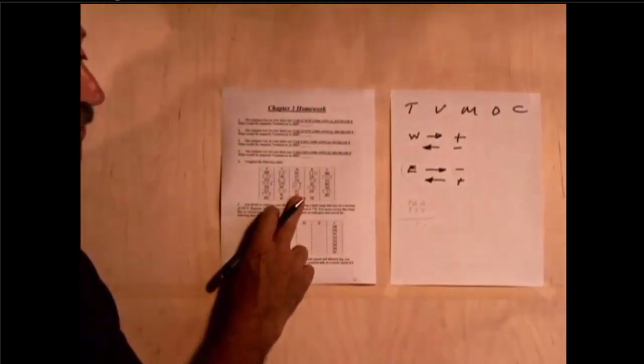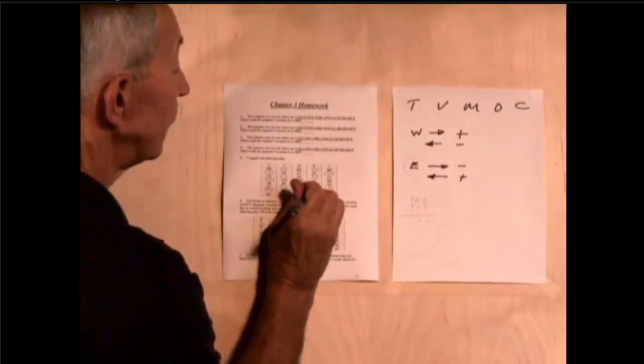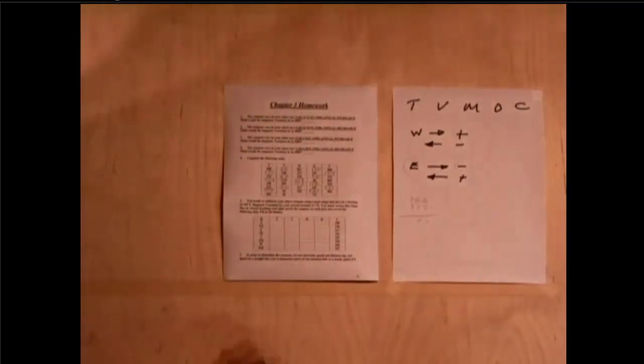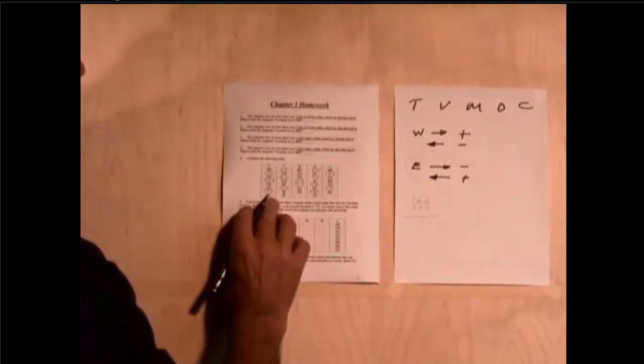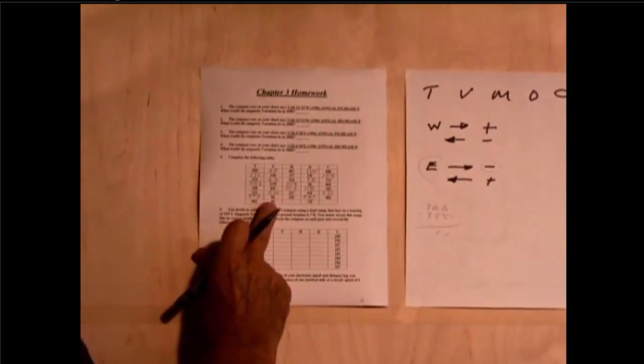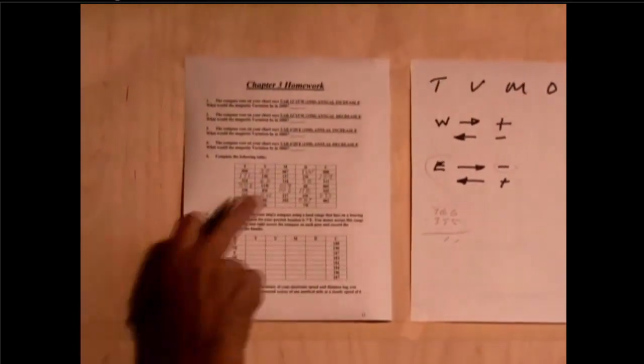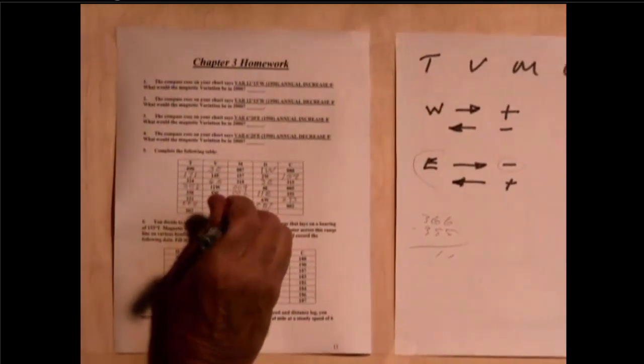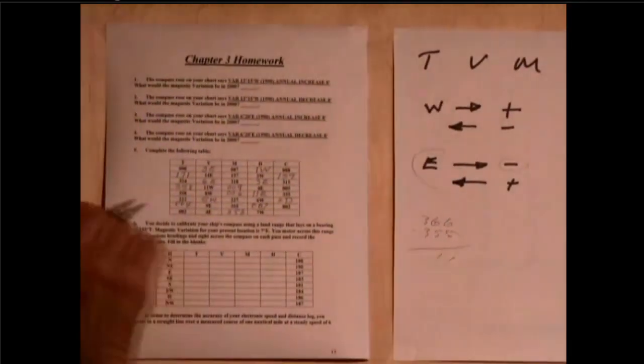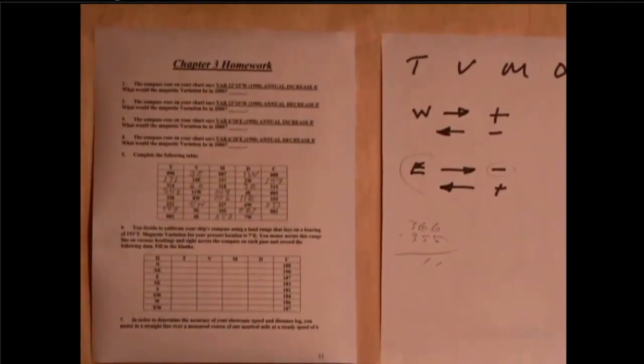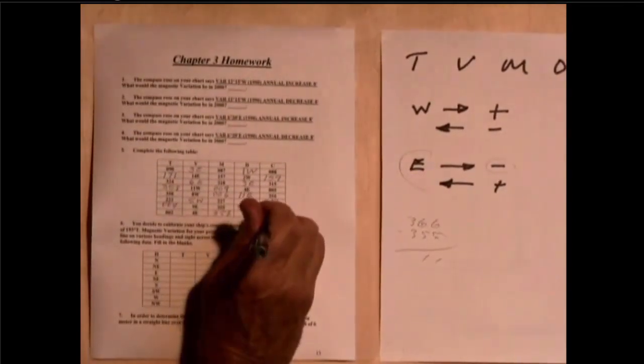And here we have 362 minus 4 east. Minus going that way is going to be 358. And this is going to be an addition. 358 plus 7 is 365 or 005.